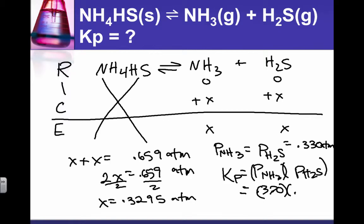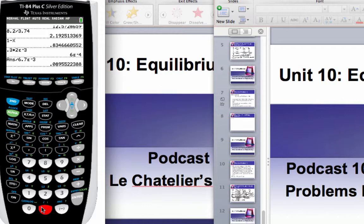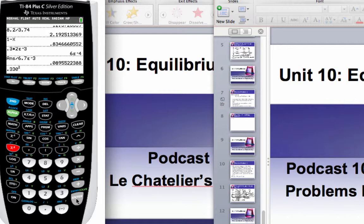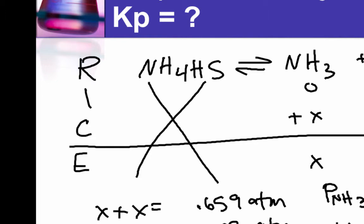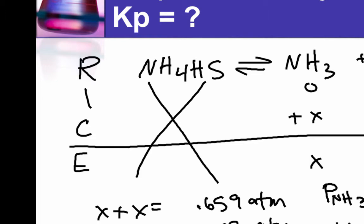Therefore Kp is 0.1089. And since I only get to keep three sig figs, let's call that 0.109.